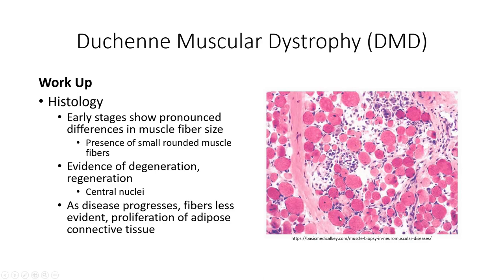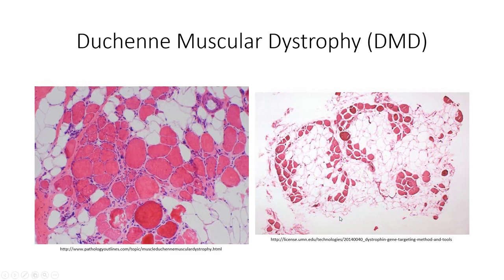As the disease progresses, necrotic fibers will appear in increasing proportions. Towards the end phase of the disease, the muscle is almost completely fibrotic, with only a small portion of living fibers remaining. As a result, the limbs become progressively frozen in positions of contracture with limited range of motion.